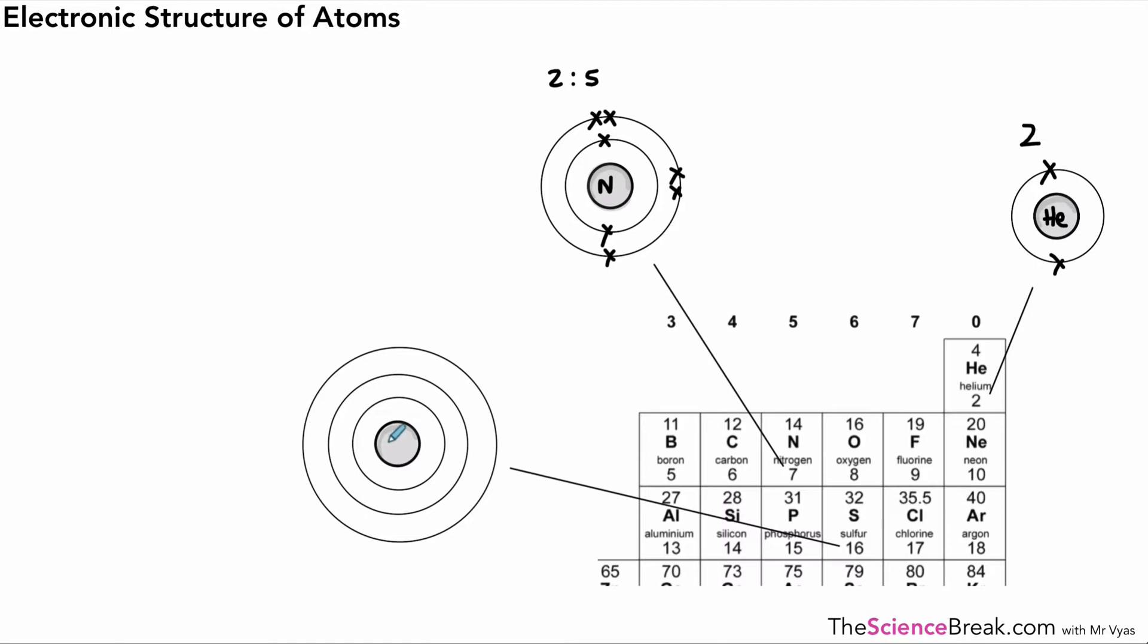For sulfur, we've got 16 electrons. So we would do two, eight in the second shell, which takes us up to a total of 10, but we need 16, so we need six more electrons: two, four, six. There we go. And our electronic structure is 2, 8, 6.